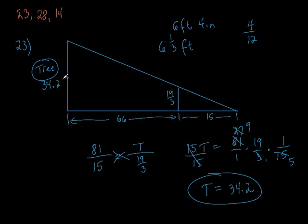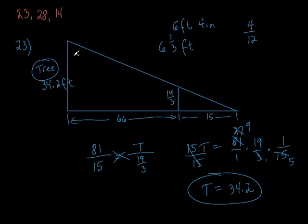Now, if some of you guys look at your quiz, this just reminds me — some of you guys were getting crazy answers. This is 6 feet 4 inches, so this is a little more than 6 right here. This is 34 — that kind of makes sense. What if I got this answer to be less than 6 feet? Would that make any sense at all? No — not if he was way further away than the shadow. Just kind of make sure that your answers make sense when you do it.